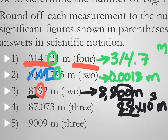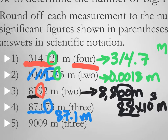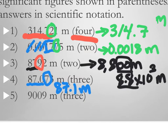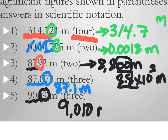The fourth number, 87.073 meters, rounded to three significant figures: one, two, three — a seven is right there, so this becomes 87.1 meters. The last number, 9,009 meters, rounded to three significant figures: one, two, three, and the next digit is a nine, so it rounds up to 9,010 meters — three significant figures, and the last zero is not significant.